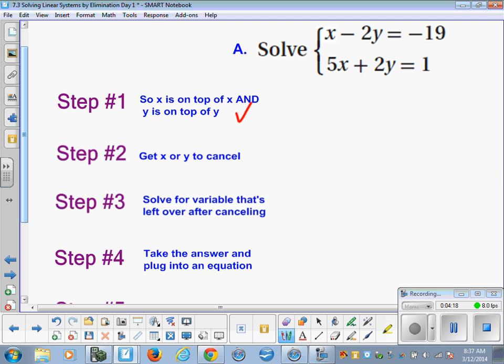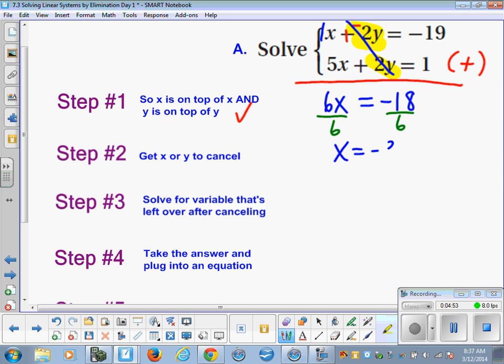Okay, the next step is to get x or y to cancel. So we usually do that by adding these two equations together. And notice here that the negative 2y and the 2y are going to, once we add these equations together, they're going to drop out. Okay, so that's what we're after. So we add 1x plus 5x and we get 6x. And the negative 2y plus 2y cancel, just like we wanted. Then it's important to write down the equal sign. And negative 19 plus 1 is negative 18. Okay, so then it's simple from there to solve by dividing both sides by 6. And you get x equals negative 3.